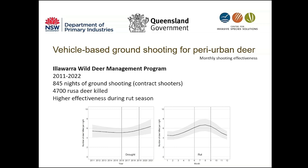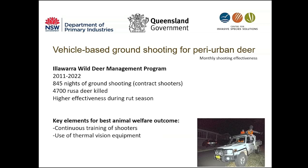The effectiveness of ground shooting was really high during the rut season, where males are known to be less wary and moving more in open areas. We tested the animal welfare outcome using contract shooters in peri-urban areas. The main finding was that this method had a good standard in terms of animal welfare outcome, but there were large differences between shooters. This means that to ensure the best outcome, every shooter involved needs good training and must maintain that training over time. New technologies like thermal vision equipment also have the potential to improve welfare outcomes of ground shooting in peri-urban areas.